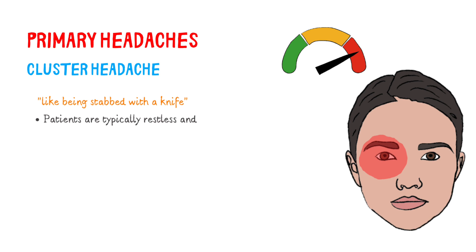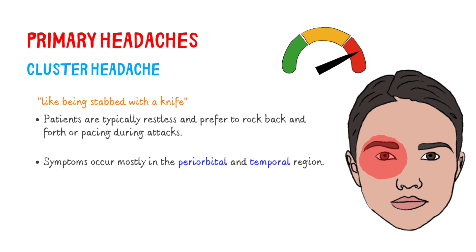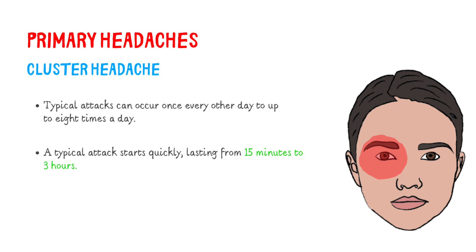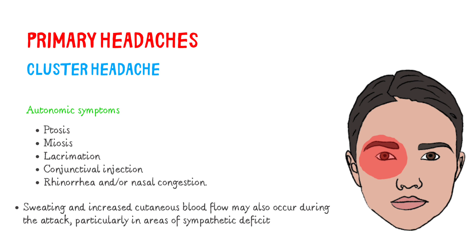Patients are typically restless and prefer to rock back and forth or pace during attacks. Symptoms occur mostly in the periorbital and temporal region. Cluster headache attacks are unilateral; in the majority of cases symptoms remain on the same side, but in some cases they may move to the other side during a different cluster attack. Typical attacks can occur once every other day to up to 8 times a day, tend to occur at the same time each day, and last from 15 minutes to 3 hours. Autonomic symptoms typically only occur during an acute attack and are on the same side as the pain. About 3% of patients with cluster headache do not have autonomic symptoms.